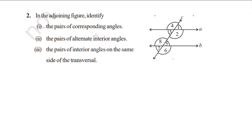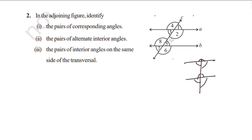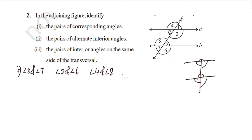We have two lines cut by a transversal. The corresponding angle pairs are: angle 3 and angle 7, angle 2 and angle 6, angle 4 and angle 8, and angle 1 and angle 5.